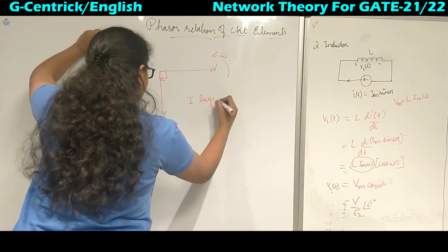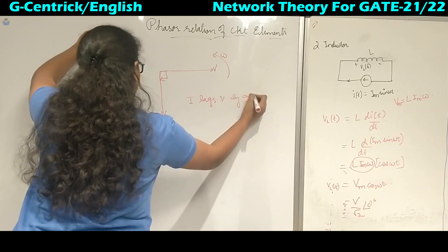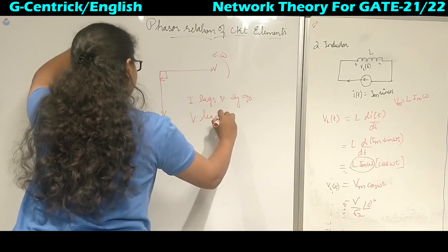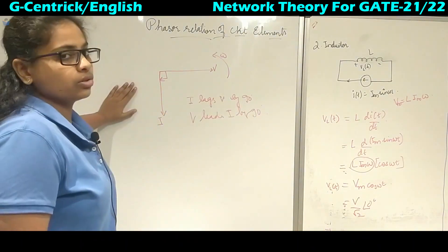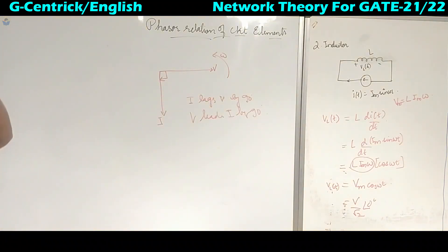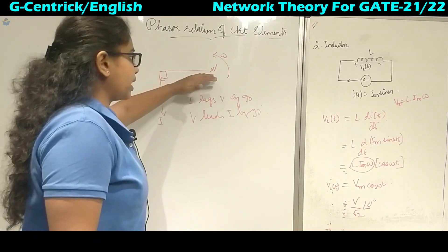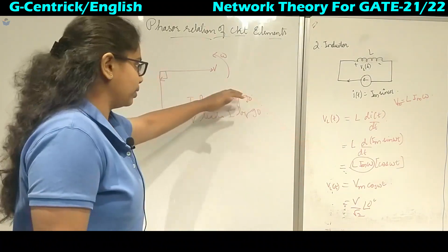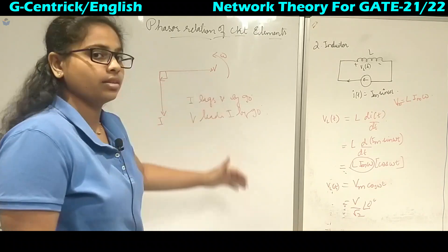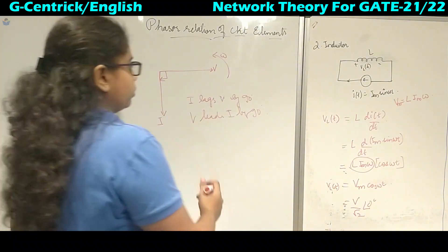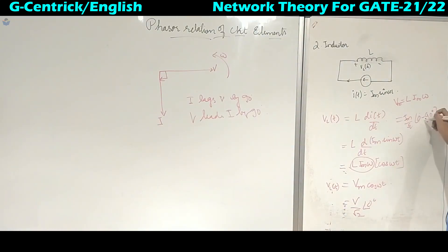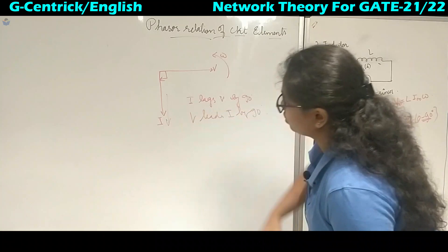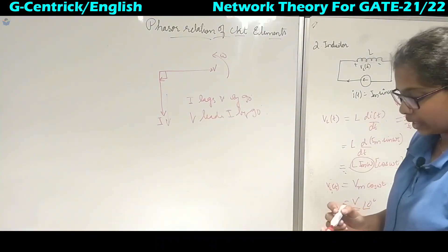Current lags voltage by 90 degrees, or equivalently, voltage leads current by 90 degrees. You can also take current as the reference and draw it — you will get the same result. Since voltage is at 0 degrees as reference, current is represented as Im/√2 at minus 90 degrees, which means it lags voltage by 90 degrees.